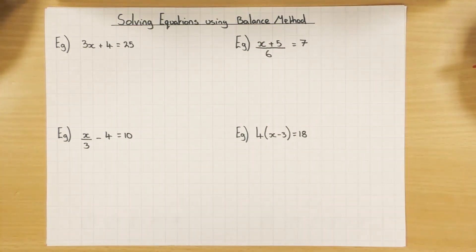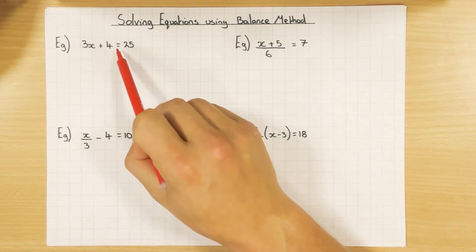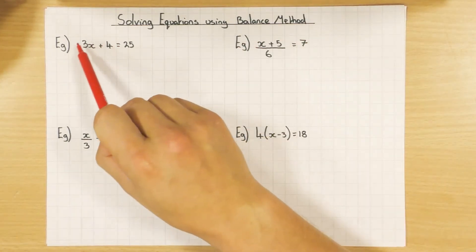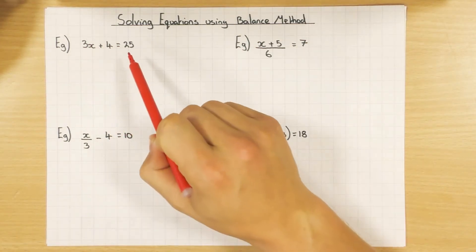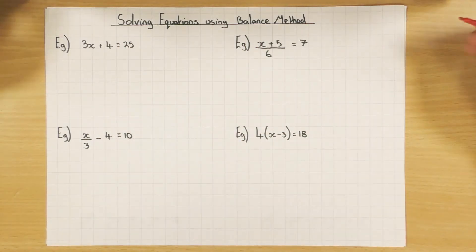Why is it called the balance method? Well, if we look here, we've got a left-hand side equals the right-hand side. We call it the balance method because whatever I do to the left-hand side, I have to do exactly the same thing to the right-hand side so both remain balanced. That's where it gets its name from.